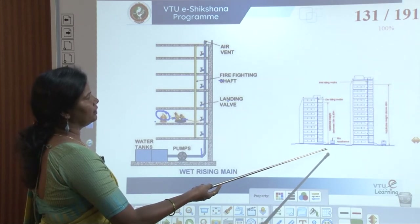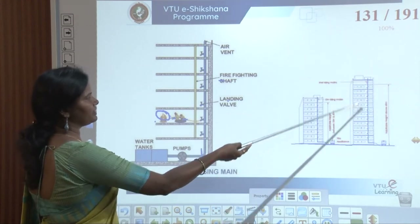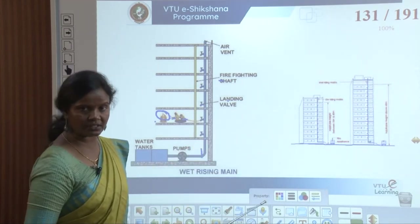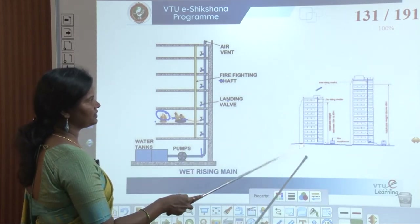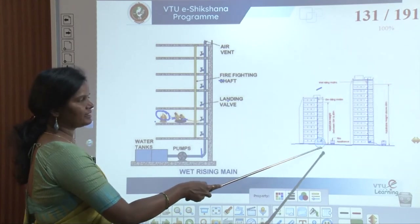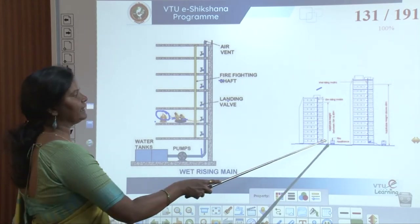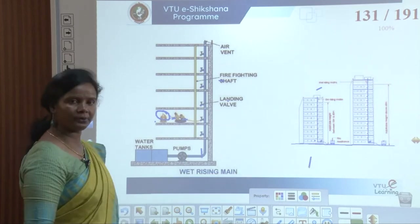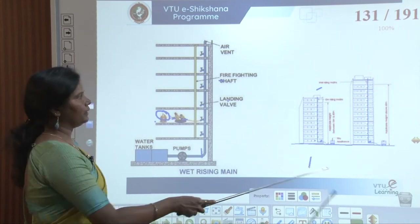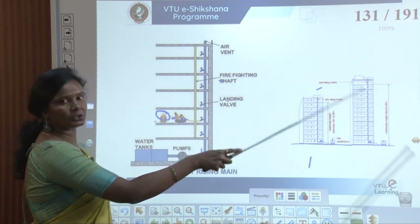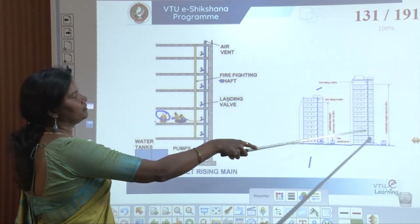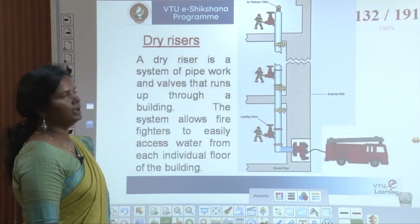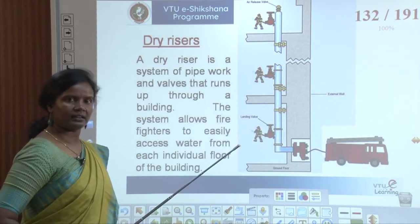In the wet riser system, there are water tanks, pumps, air vents, and a firefighting shaft connected with landing valves at each floor. For example, if there is a fire on the second floor, only that valve is connected with the hose reel of minimum length and the fire is extinguished. Wet sprinkler systems are horizontal under the roof, whereas wet and dry riser mains are vertical pipes located towards the external surface of the building for high-rise buildings.